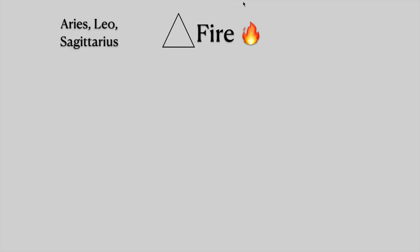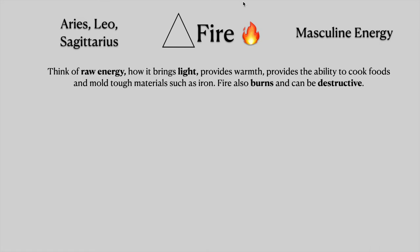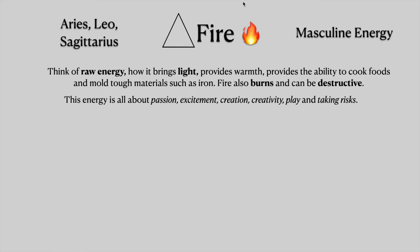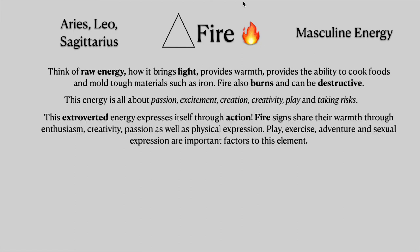So to start, we will start with fire. This is Aries, Leo, Sagittarius — masculine energy. Think of raw energy, how it brings light, provides warmth, provides the ability to cook foods and mold tough materials such as iron. Fire also burns and can be destructive. This energy is all about passion, excitement, creativity, creation, play, and taking risks. This extroverted energy expresses itself through action. Fire signs share their warmth through enthusiasm, creativity, passion, as well as physical expression.